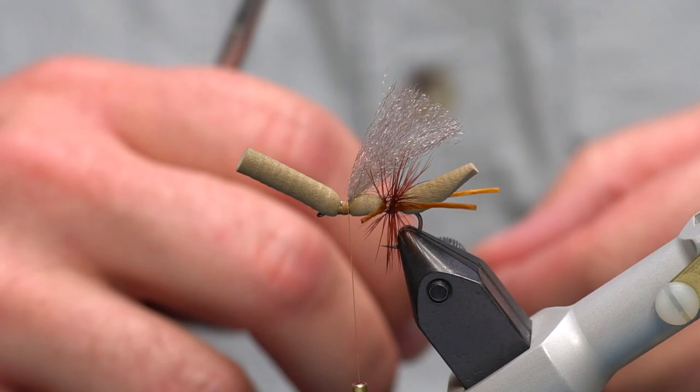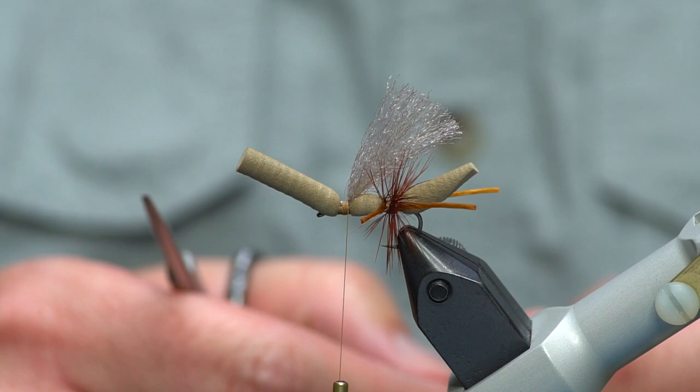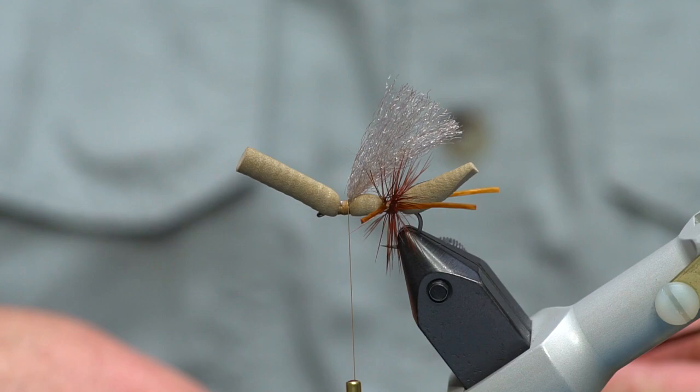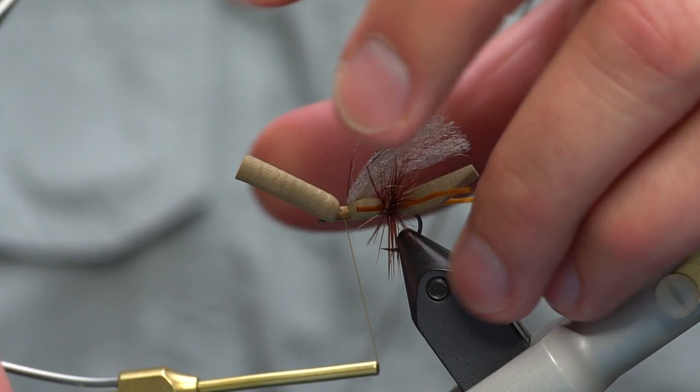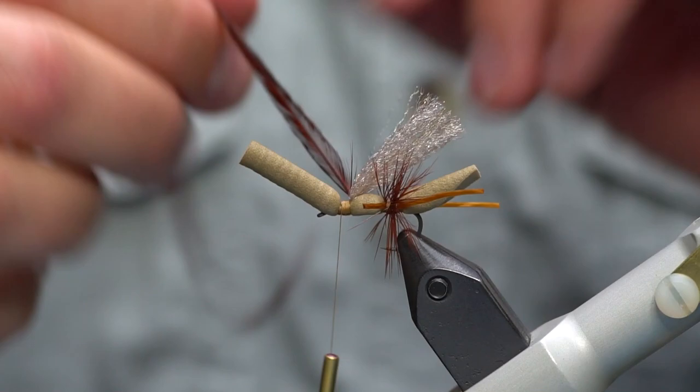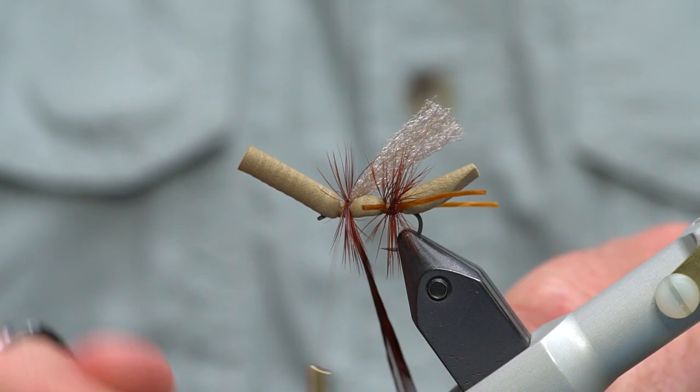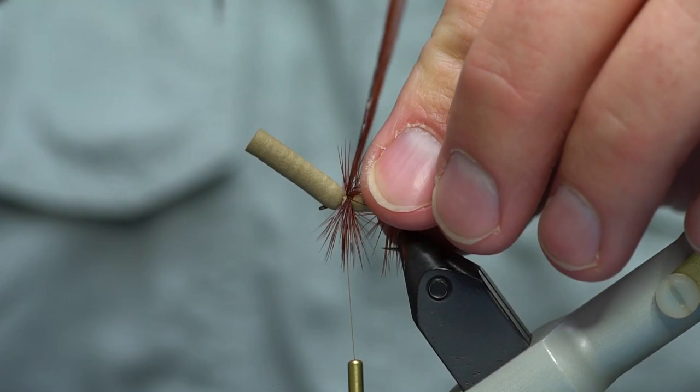Then we're going to add the hackle again, same Coachman brown hackle. This is a saddle, you could also use a cape, whatever you can get your hands on. I should mention that I often do these maybe one size too big on the hackle. I like to oversize them just a little bit, or maybe half size too big. The hackle I end up cutting as you'll see here in a second, and it just works as kind of like outriggers on the side of the fly to help keep it landing the right way as you're fishing it. So we'll do three or four wraps with the hackle.